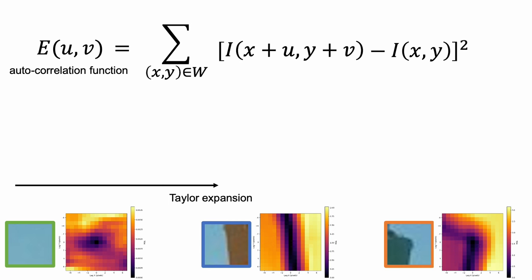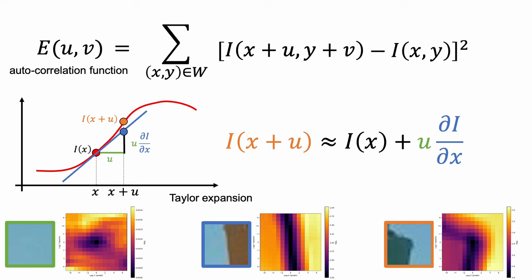Taylor expansion of a function can be expressed as a sum of derivative terms at a single point. Here, the higher order terms become negligible because we assume a small displacement U.